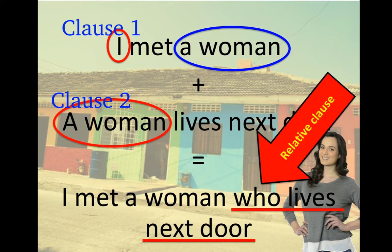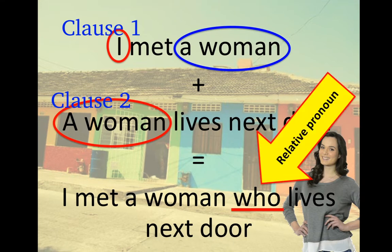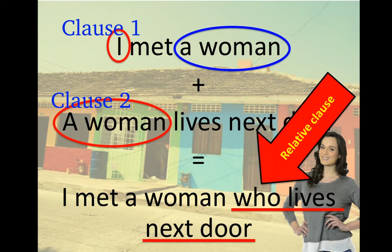And what is a relative clause? Well, the relative clause is the piece of a sentence — the clause — that starts with a relative pronoun. So remember: 'who,' in this case, is the relative pronoun, and the relative clause is the piece of a sentence that starts with a relative pronoun.